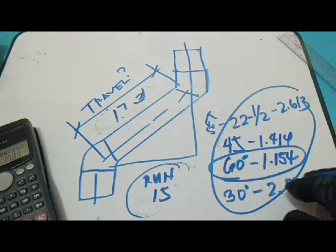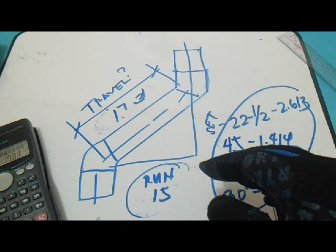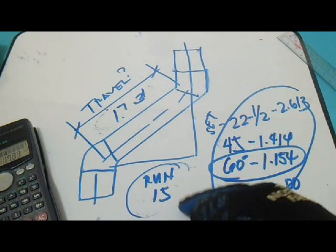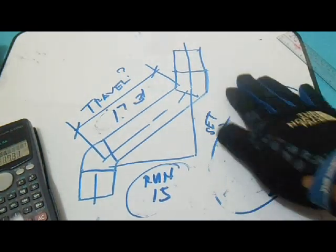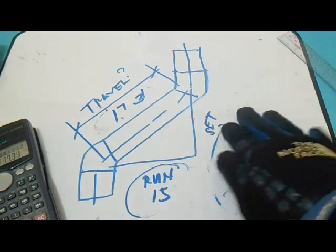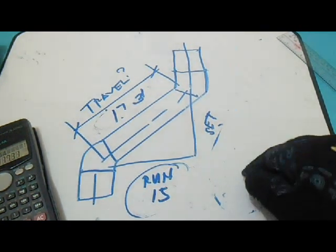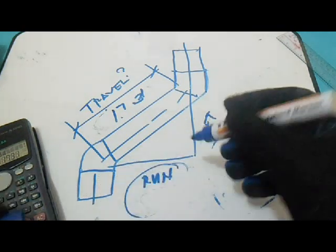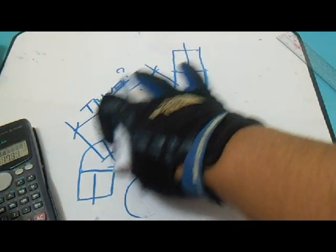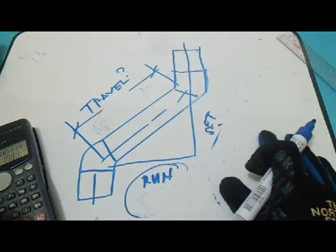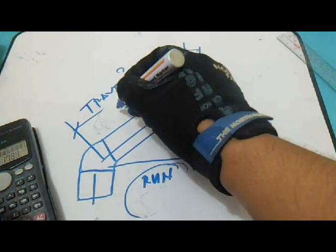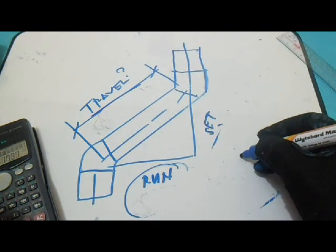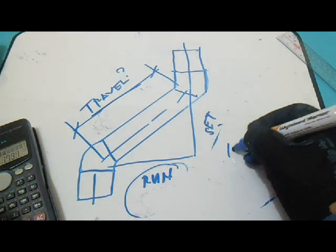And how about to find the run? Okay, it's the same formula for the 45. Let's try it to find this run. If the given is travel, yes, in the 45, just multiply it to also 1.414.